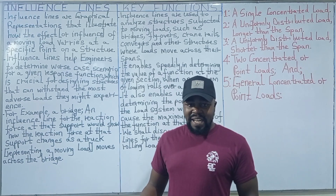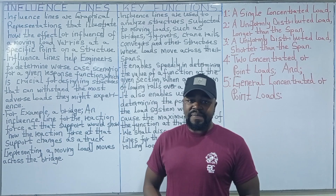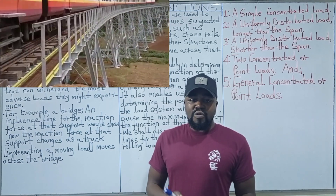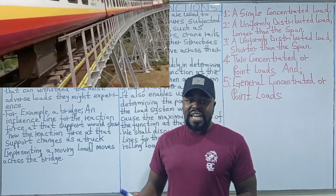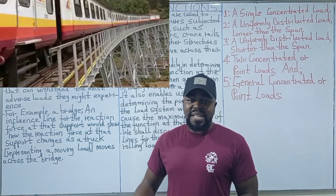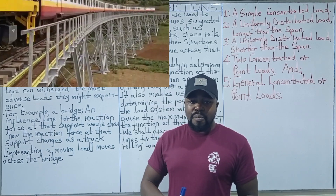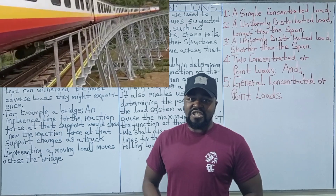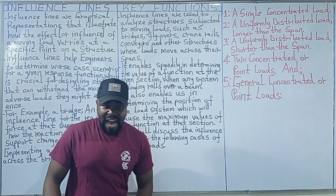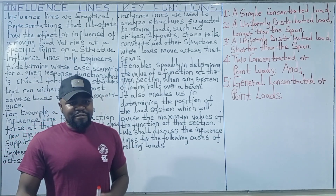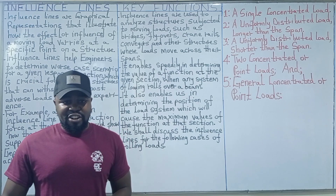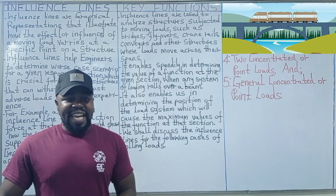For example, imagine a bridge. An influence line for the reaction force at one support would show how that reaction force changes as a truck — representing a moving load — moves across the bridge. Key functions: influence lines are used to analyze structures subjected to moving loads such as bridges, crane rails, conveyors, and flyovers where loads move across their spans.